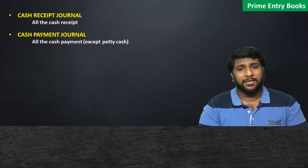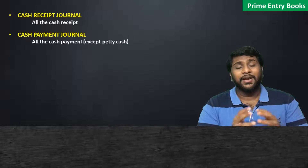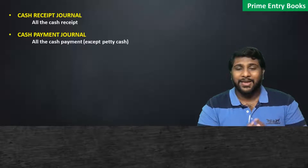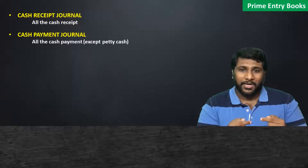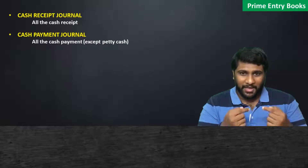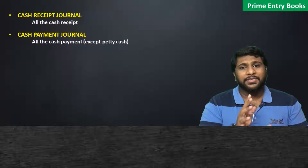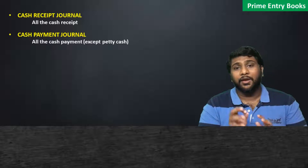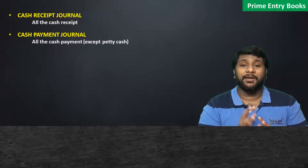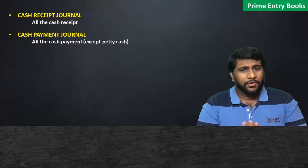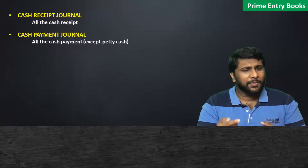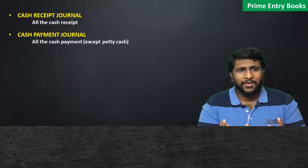The second prime entry book is the cash payment journal. Very simple — whatever the cash payment transactions, you have to record them in the cash payment journal for the first time.